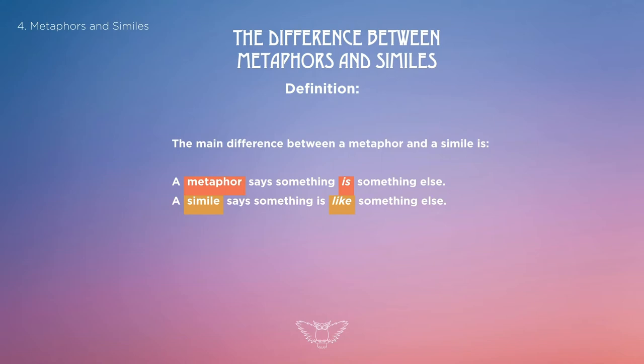Let's look at definitions. The main difference between metaphor and simile is that a metaphor says something is something else, whereas a simile says something is like something else.